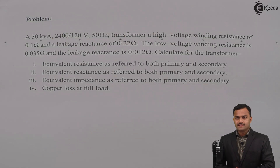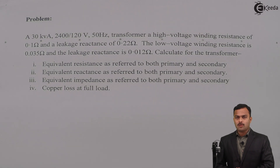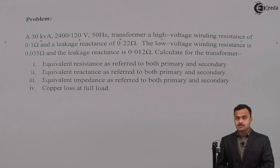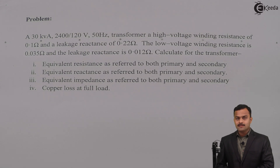Hi friends, in this video we are going to solve a problem based on equivalent circuit of a single phase transformer. The problem statement is: A 30 kVA, 2400/120 volt, 50 hertz transformer. High voltage winding resistance is 0.1 ohm and leakage reactance 0.22 ohm. The low voltage winding resistance is 0.035 ohm and the leakage reactance is 0.012 ohm.